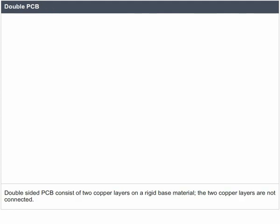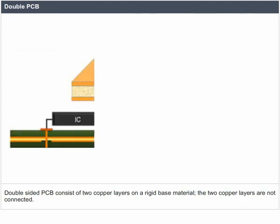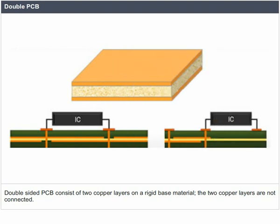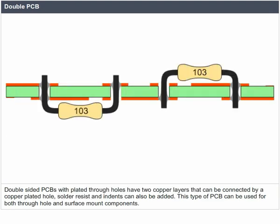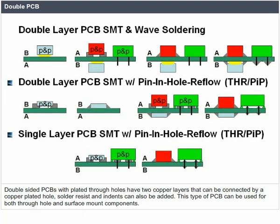Structure of double-sided PCB: double-sided PCB consists of two copper layers on a rigid base material. The two copper layers are not connected by default. Double-sided PCBs with plated through holes have two copper layers that can be connected by a copper-plated hole. Solder resist and indents can also be added. This type of PCB can be used for both through-hole and surface mount components.